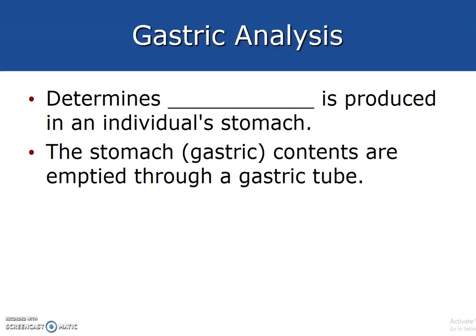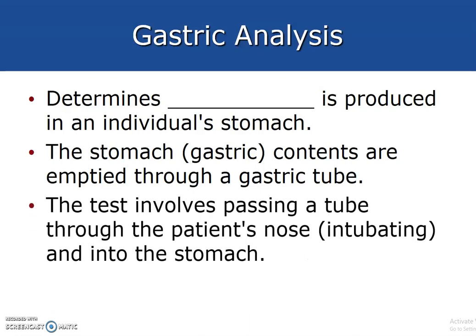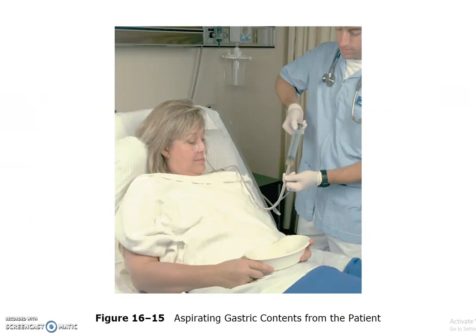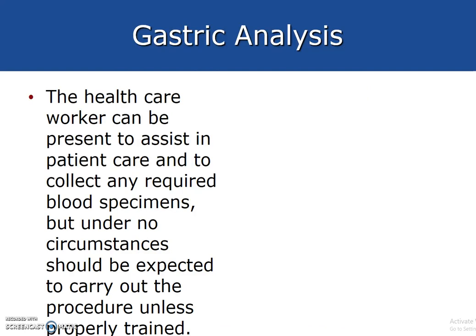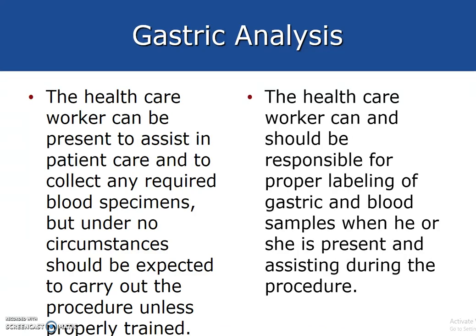Gastric analysis determines the acid level or the amount of acid produced in an individual's stomach. The stomach gastric contents are emptied through a gastric tube, which involves passing a tube through the patient's nose and into the stomach. We might receive the syringe for analysis in the lab, so you need to be aware of what it looks like. This also covers how we label the specimen.